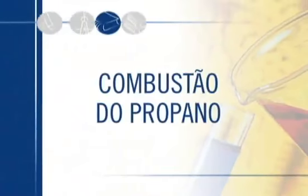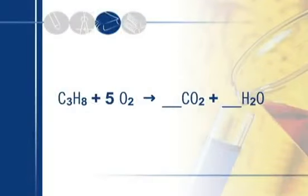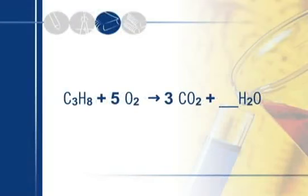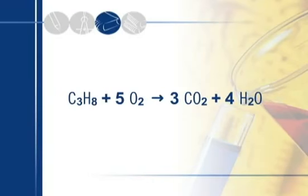Vamos exemplificar detalhando a combustão do propano. Propano é um alcano: fórmula CnH2n+2. Propano é um alcano de 3 carbonos, consequentemente C3H8. Vamos balancear essa equação. Não são 3 carbonos no propano? Então tem que ser 3 de CO2. Não são 8 hidrogênios do propano? 8 hidrogênios, consequentemente a equação fica completamente balanceada.